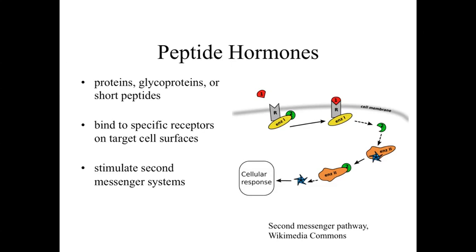There are two general classes of hormones. The first are peptide hormones, which can be proteins, glycoproteins, or short peptides that are secreted, picked up by the bloodstream, and circulated through the body. Peptide hormones generally interact with specific cell surface receptors — molecules on the surface of the membrane capable of binding to that hormone. When the hormone binds to the receptor, it activates or stimulates some type of secondary messenger system. The hormone is the primary messenger; the second messenger operates within the cell, activating cyclic AMP, the PIP pathways, the IPP pathways, and other pathways — essentially turning up or turning down some type of cellular process.